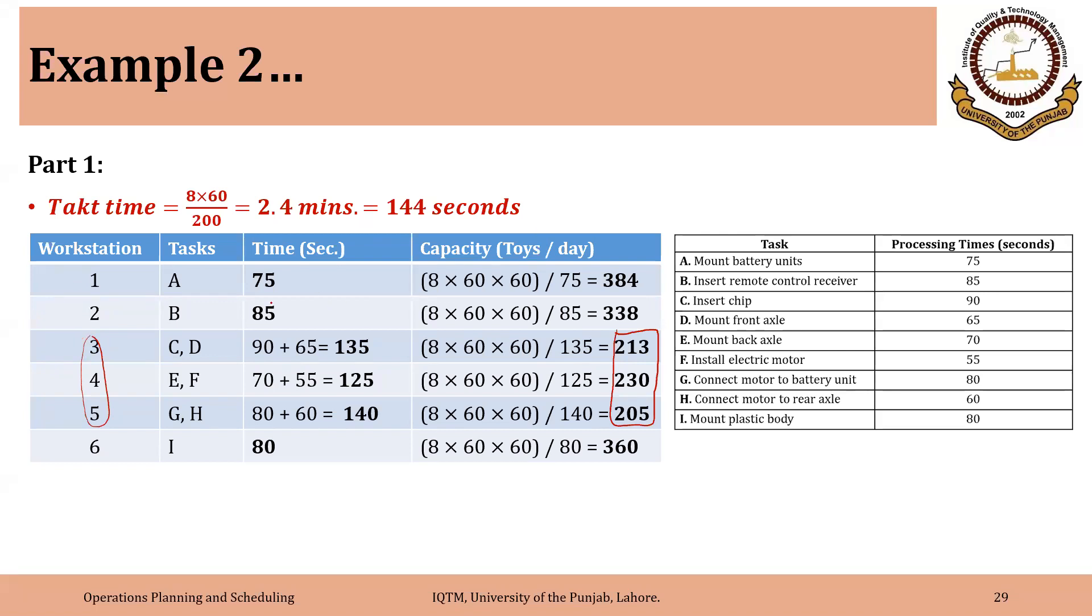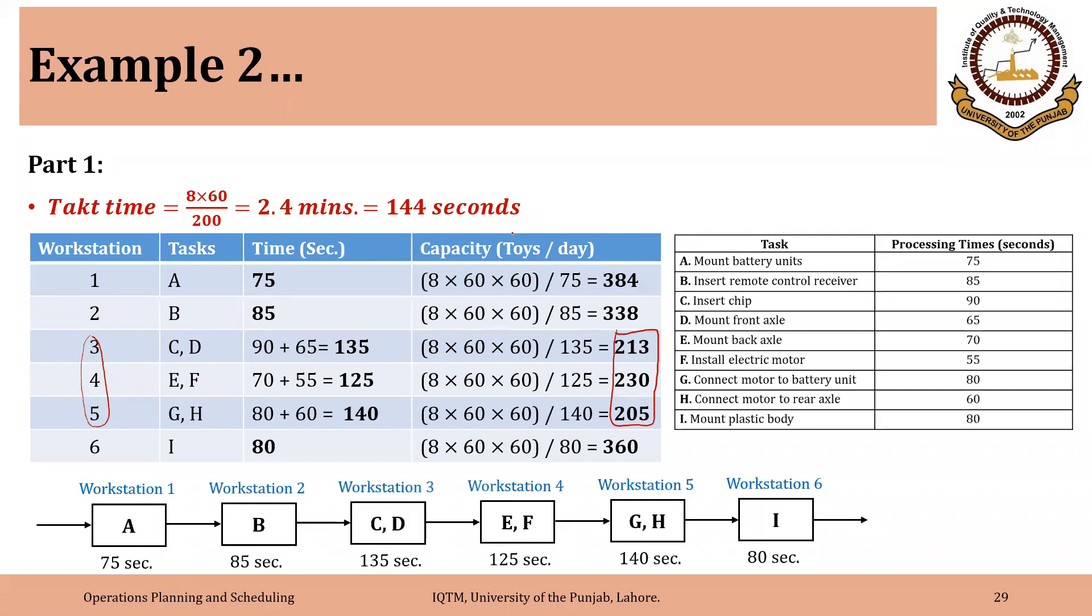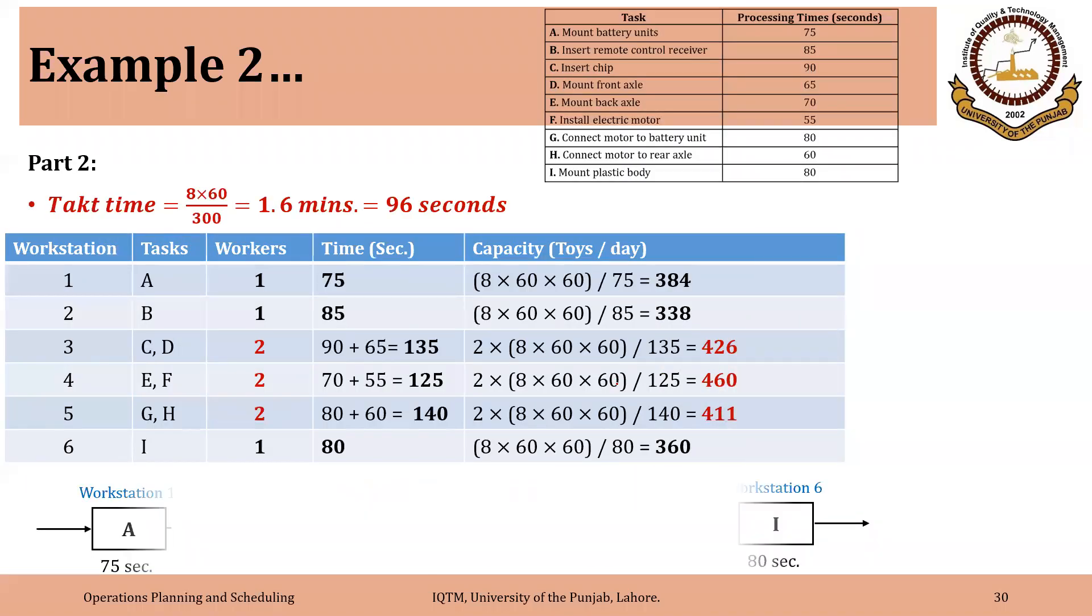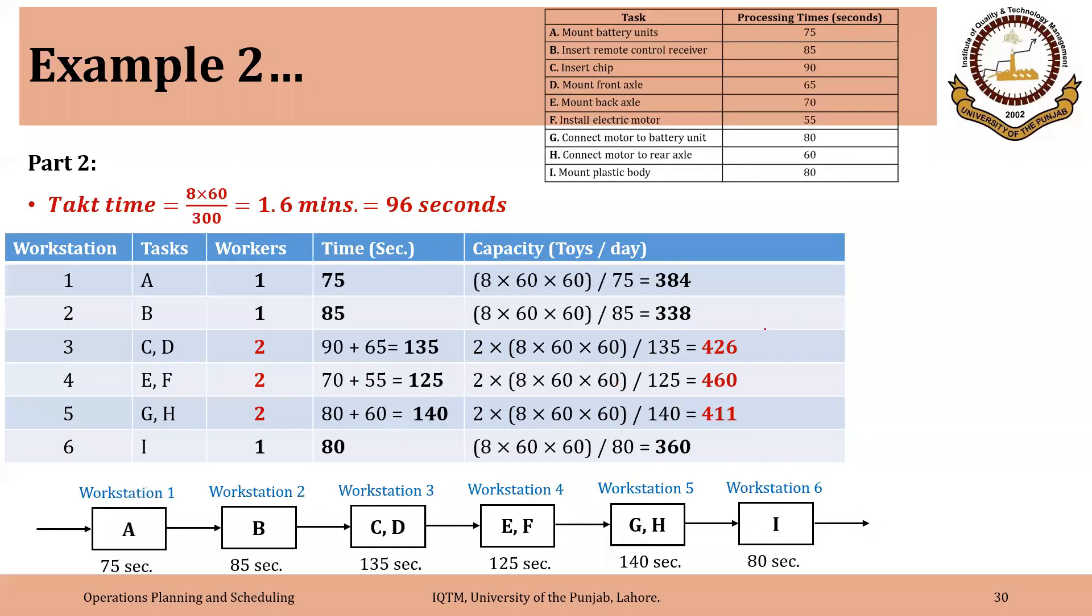So simply we can add one worker to each of these workstations to increase the capacity. So these are the workstation that we will be having. So workstation 1, 2, 3, 4, 5 and 6 and the tasks that will be performed at each workstation. We have to add worker at each of these three workstations.